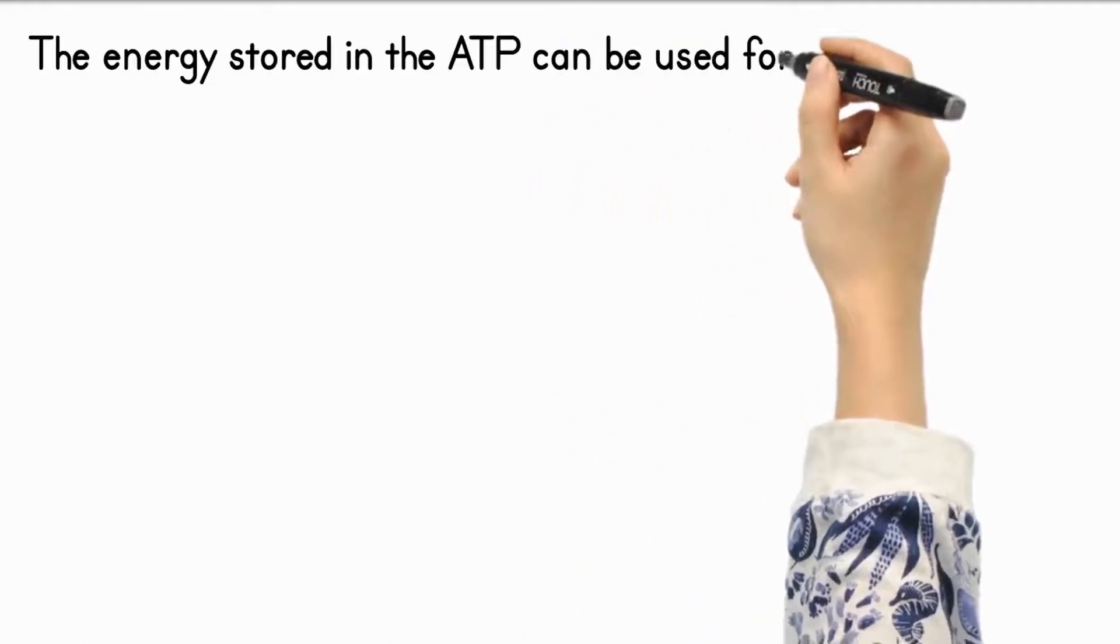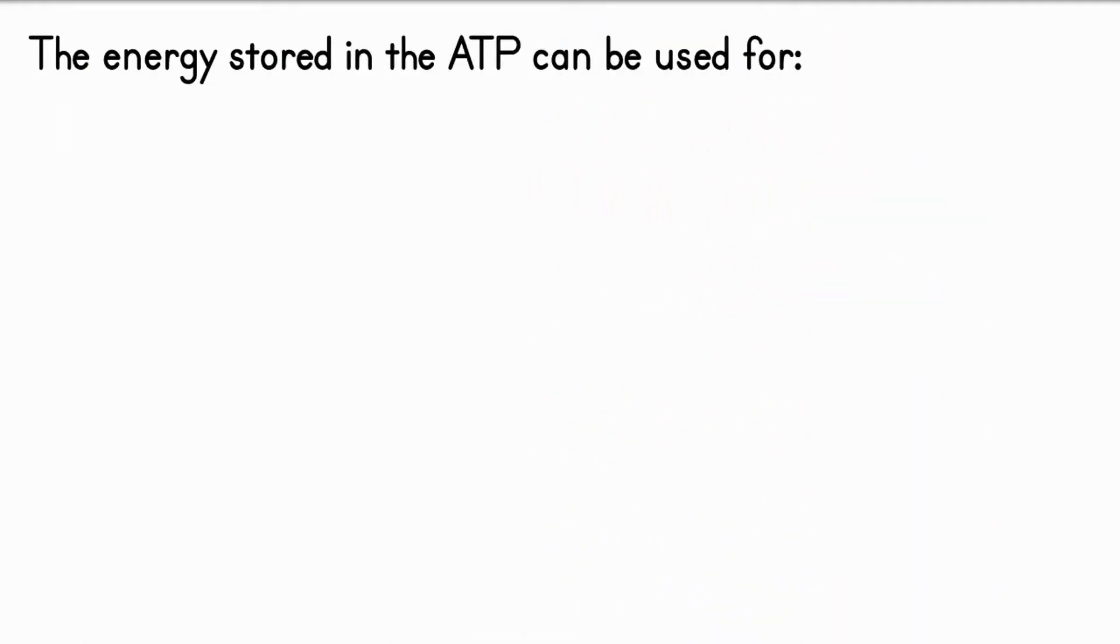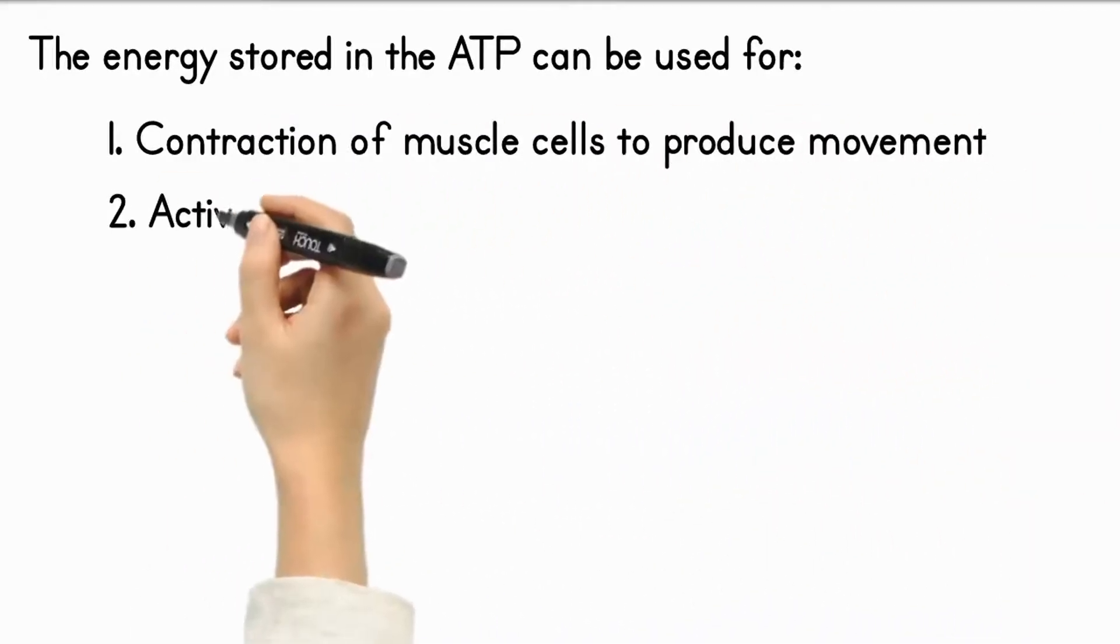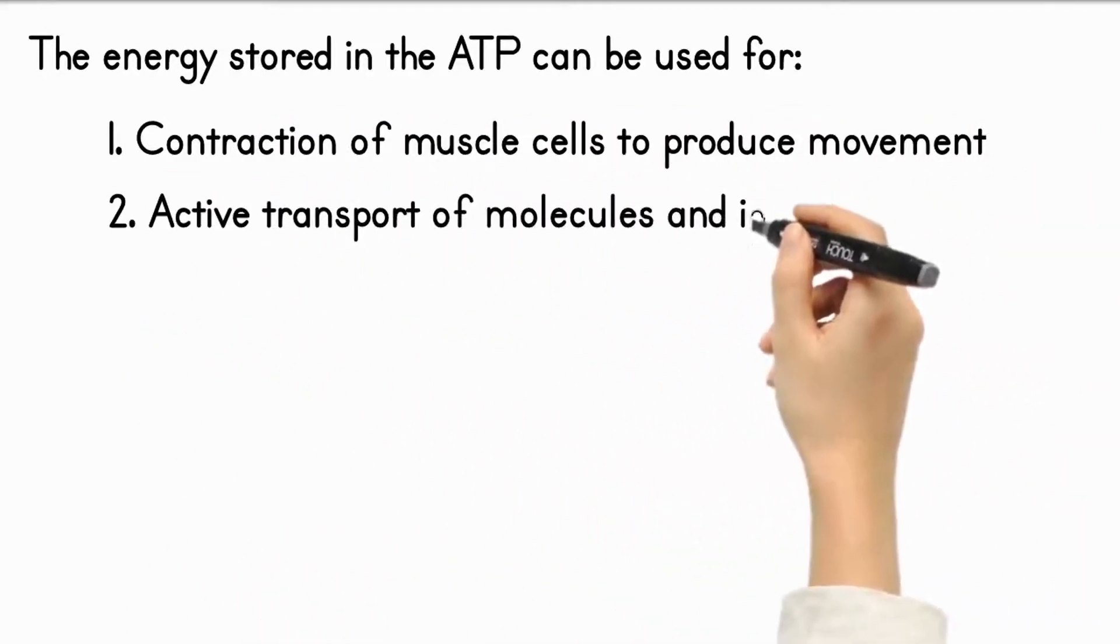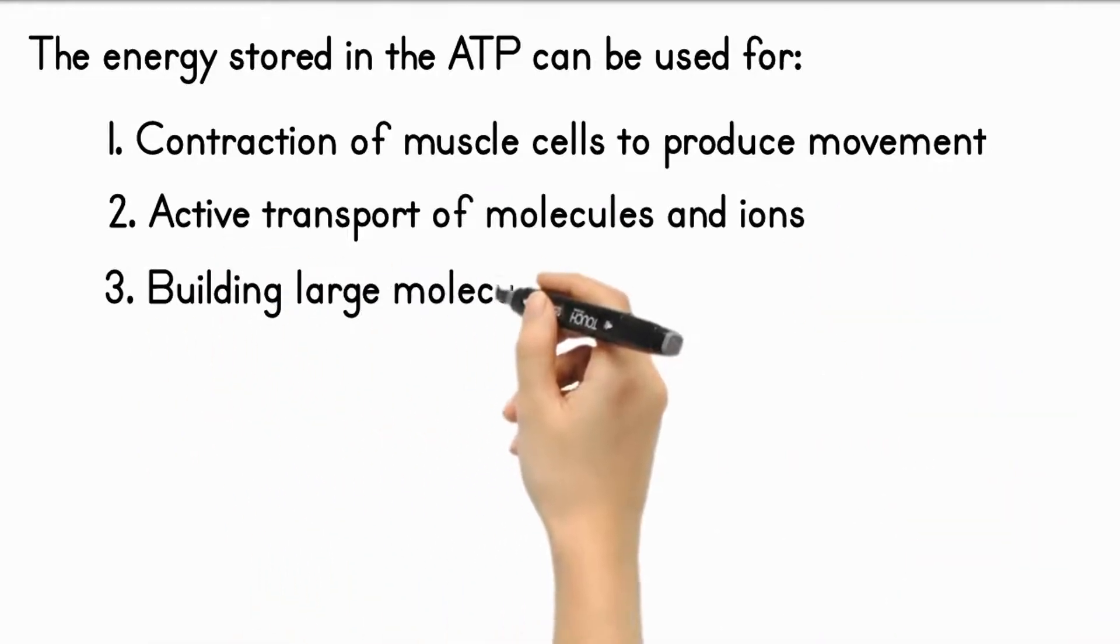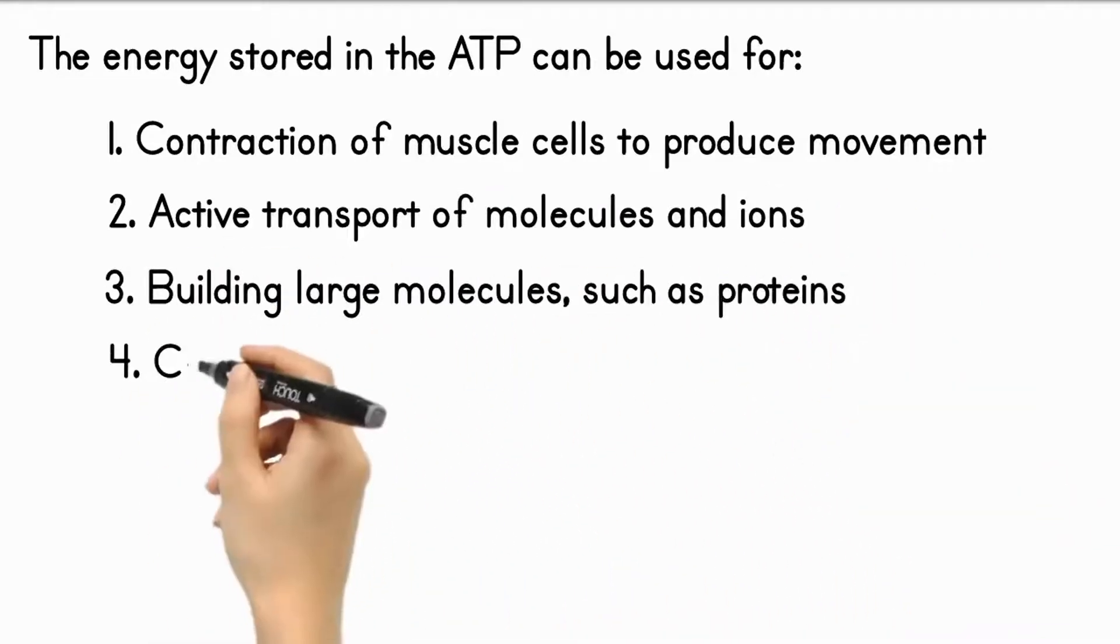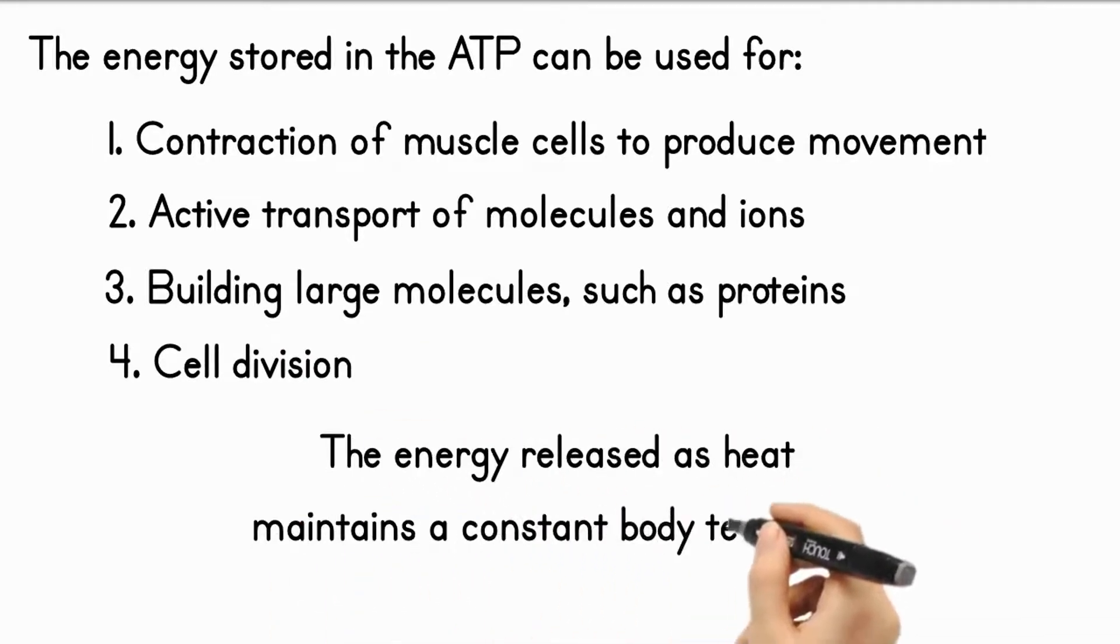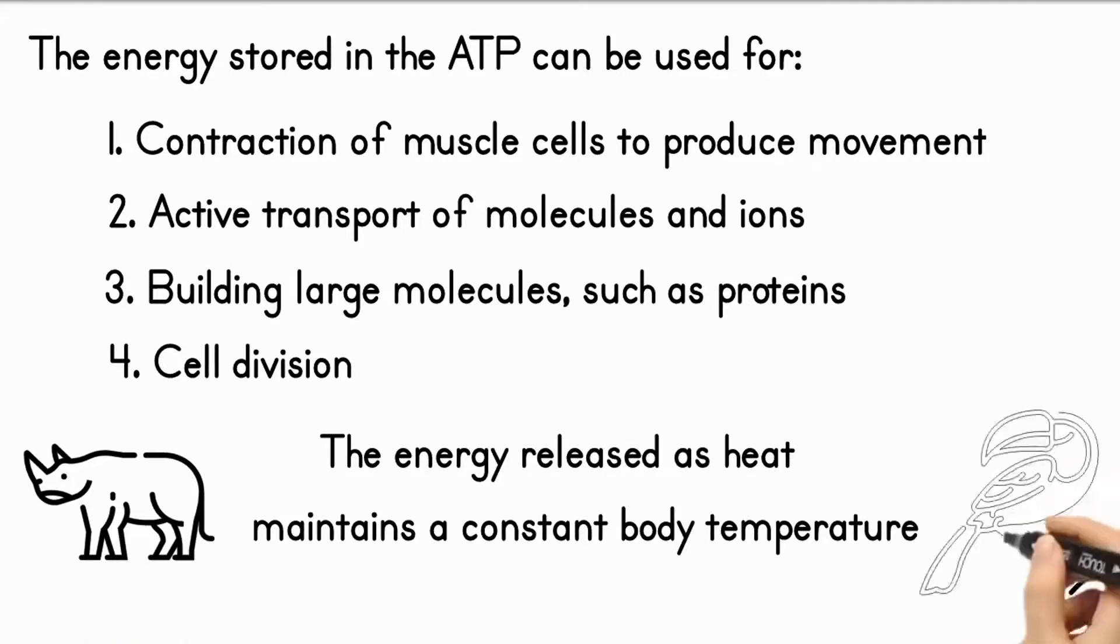The energy stored in the ATP molecules can then be used for a variety of purposes such as contraction of muscle cells to produce movement, active transport of molecules and ions, building large molecules such as proteins, and cell division. The energy released as heat is also used to maintain a constant body temperature in mammals and birds.